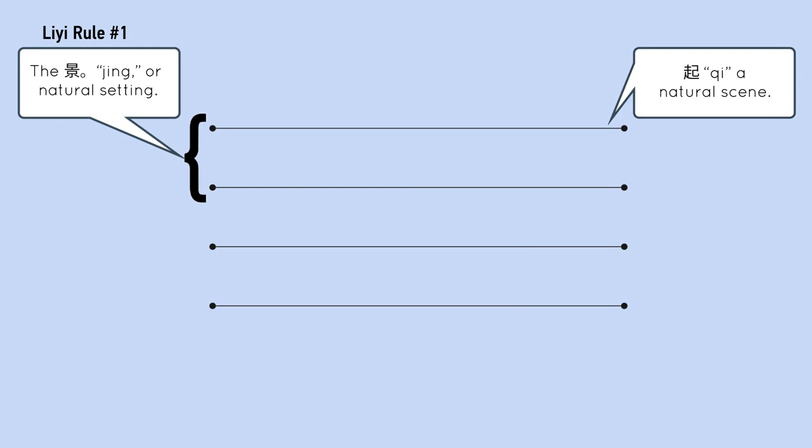The first line is called Qi, and it introduces the natural scene. The second line is called Zheng, and it deepens and extends the Jing, or natural setting.